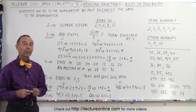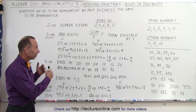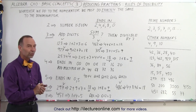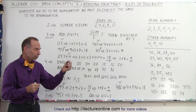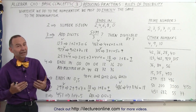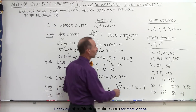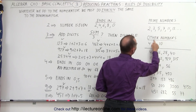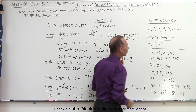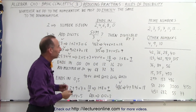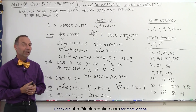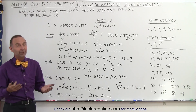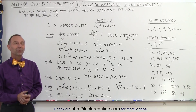Those are some handy rules to know when you start simplifying fractions. If you can think of those rules, you can quickly see if the numerator and the denominator can be divided by the same number — especially when that number is 2, 3, 5, 11, 4, 9, or 10. That gives you quite a few numbers to play with, making it a lot easier to simplify fractions.